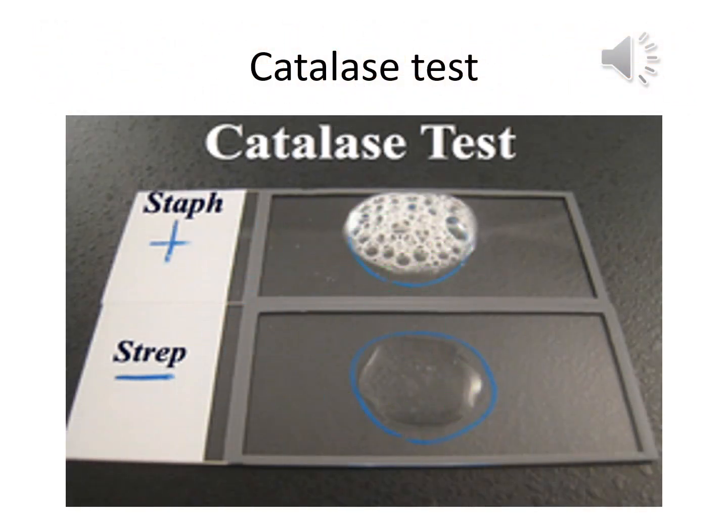The catalase test is used to identify organisms that produce the enzyme catalase. This enzyme detoxifies hydrogen peroxide by breaking it down into water and oxygen gas. The bubbles resulting from production of oxygen gas clearly indicate a catalase-positive result. Staphylococcus gives a catalase-positive result while Streptococcus gives a catalase-negative result.